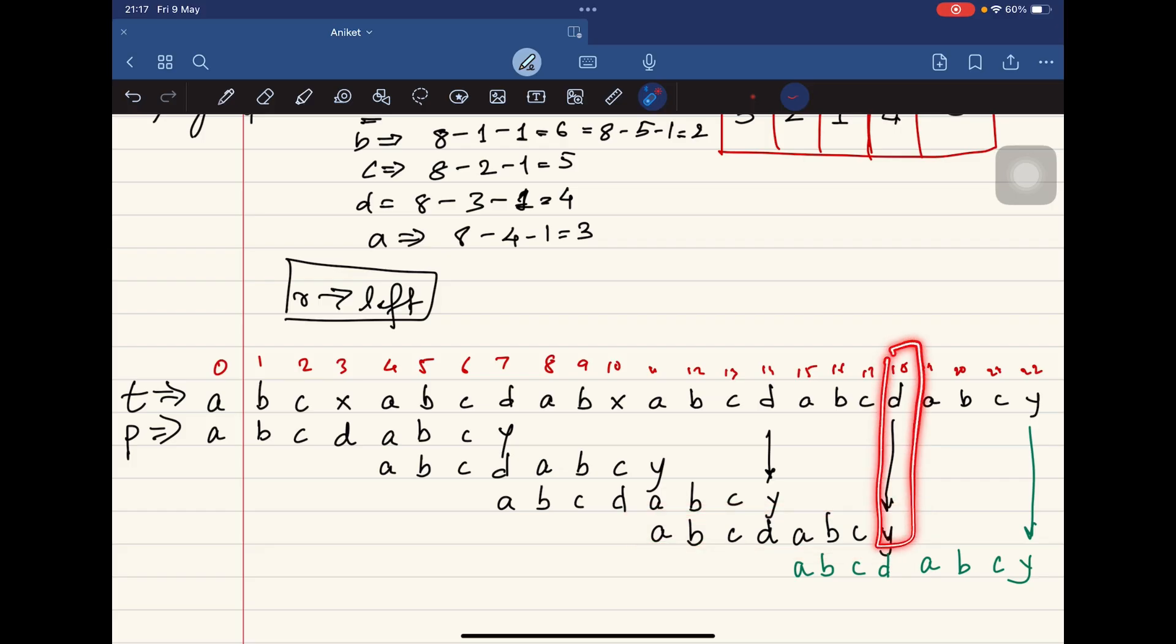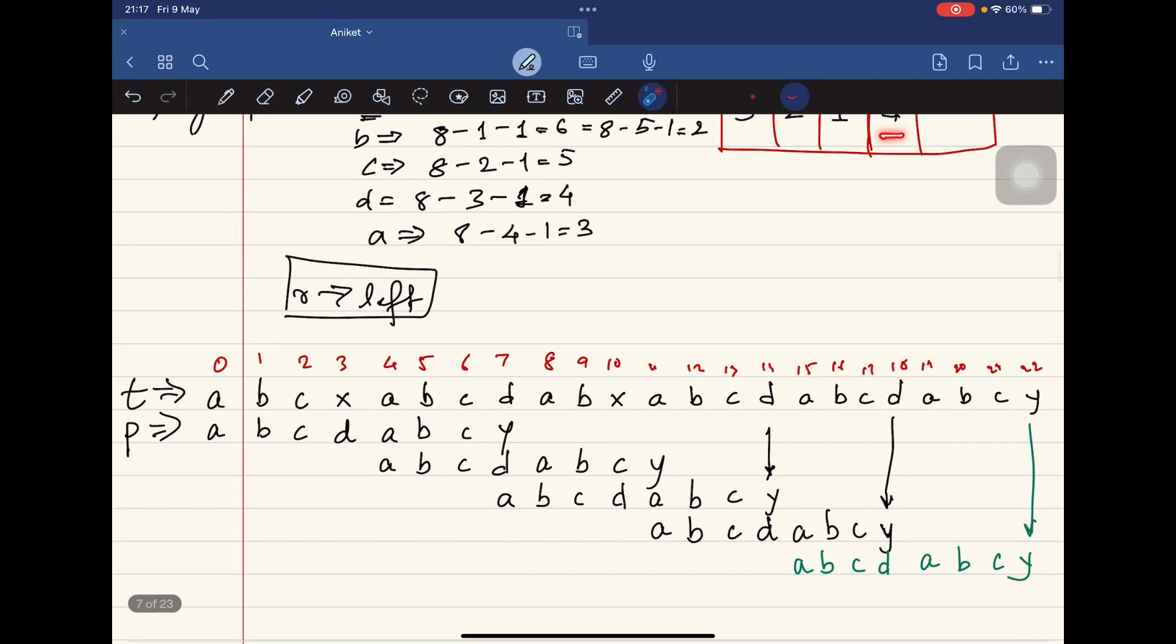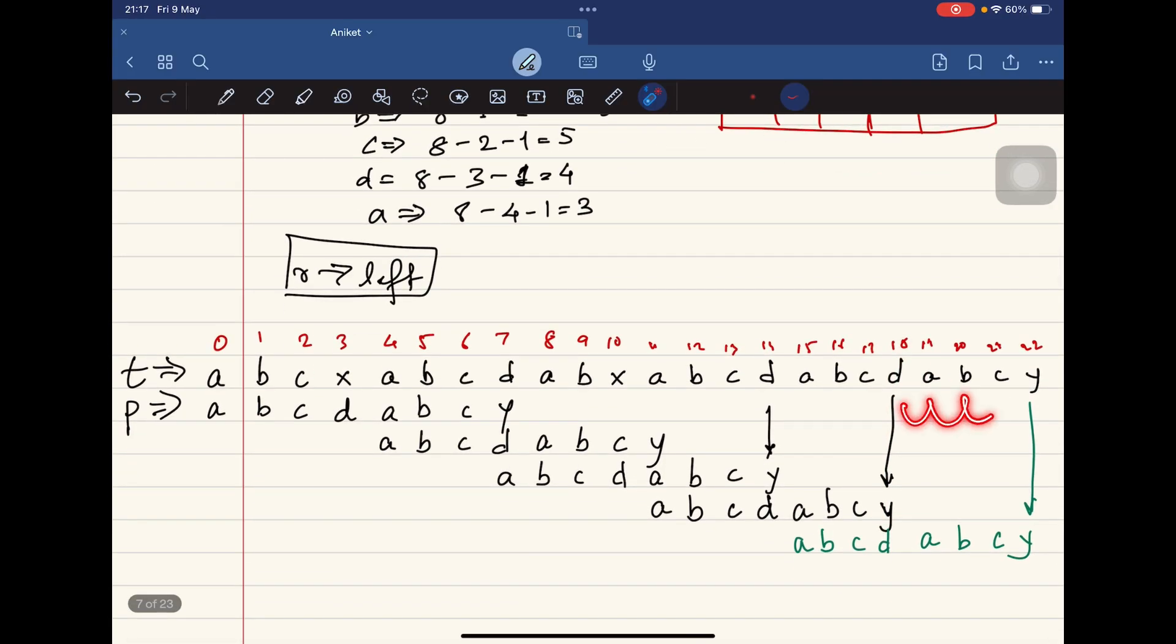Now we check D. Again there's a mismatch. Again 4 steps ahead: 1, 2, 3, and 4. We come at the last position. Now it matches.